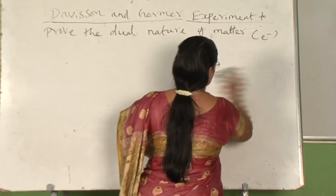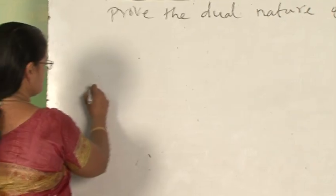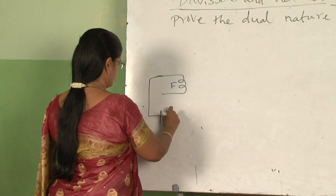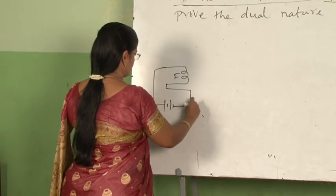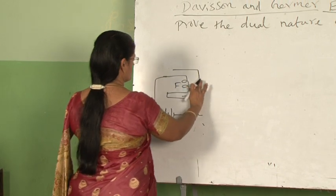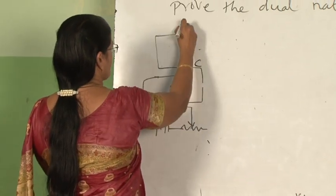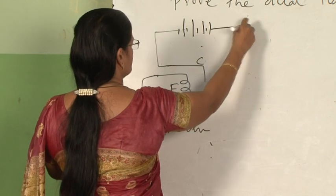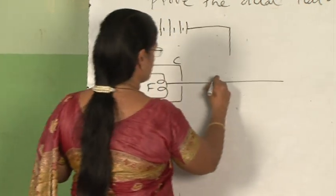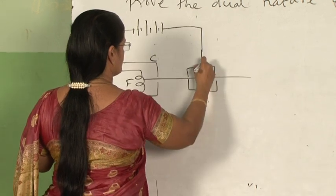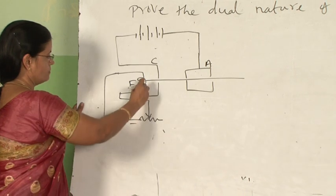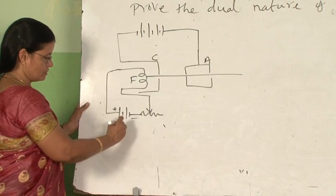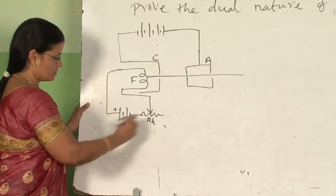Now we will see the experimental setup used by Davisson and Germer. It consisted of a filament F, which is made up of tungsten coated with barium oxide. It is heated by using a low tension battery. This is the rheostat used to change the voltage applied.